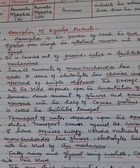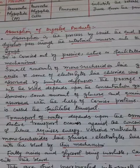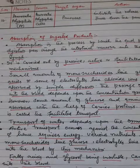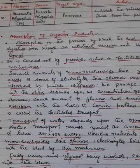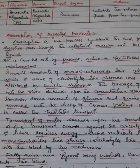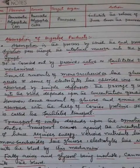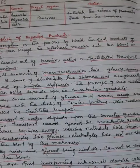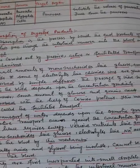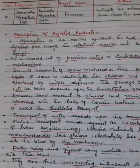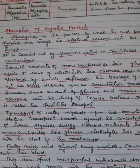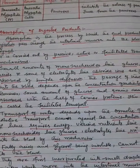Good morning, students. Today's class is about the absorption of digestive products, or the absorption of digested food. Absorption is the process by which the end products of digestion pass through the intestinal mucosa into the blood or lymph. It is carried out by passive, active, or facilitated transport mechanisms.